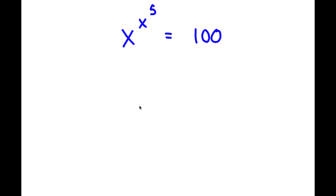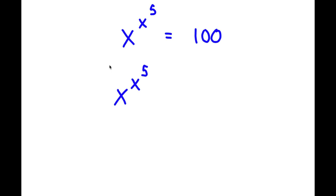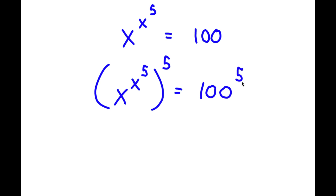In this problem, I have x to the power of x to the power of 5 is equal to 100. To solve this, I'm going to first start by taking the power of 5 on both sides. So now I have x to the power of x to the power of 5 to the power of 5, which is equal to 100 to the power of 5.